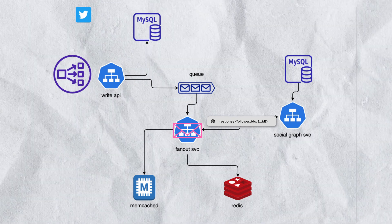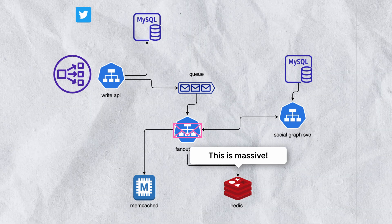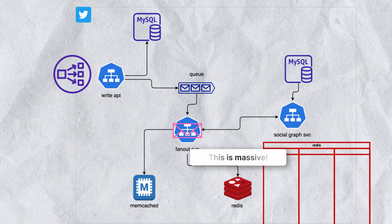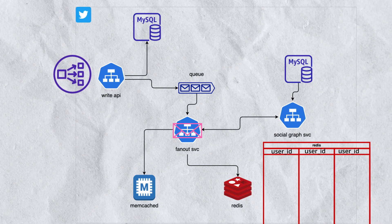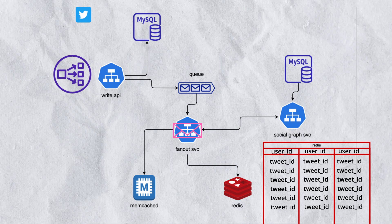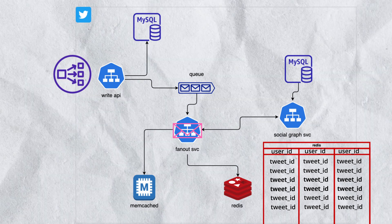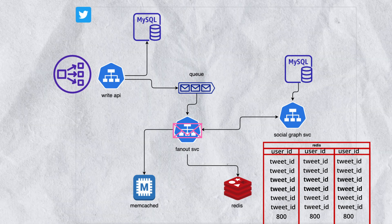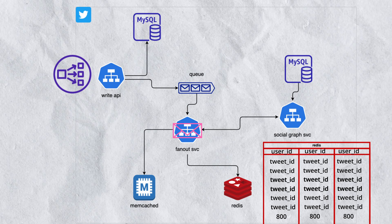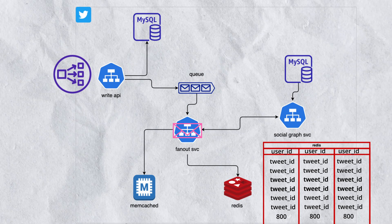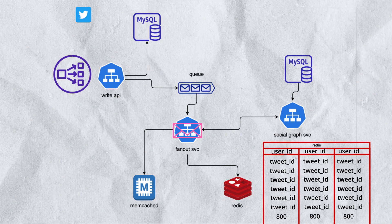Every user on Twitter's home timeline is stored in this massive Redis cache. Within this Redis cache, every user ID represents a key, and the value pointed to by that key is a list containing all of the tweets in the user's home timeline. For every user, there's only a maximum of 800 tweets that can be contained within this list. The actual list doesn't contain the tweet body — it just contains the tweet ID and the user ID, and maybe some metadata as well.